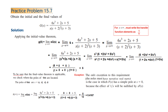Applying the Final Value Theorem: G(∞) equals limit S tends to 0 of S·G(s). Since S equals 0 we put the value directly: the numerator gives 5 and the denominator gives 4 times 3 which is 12. So the final value is 5/12, which equals approximately 0.4167.